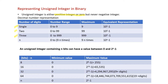For n digits, the maximum is 9 repeated n times, so the range is 0 to 9 repeated n times, and the equivalent representation of the maximum number following the pattern is 10^n - 1.